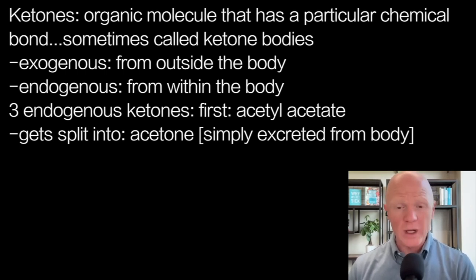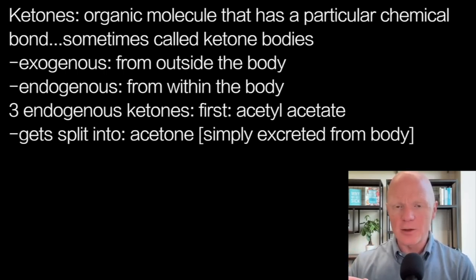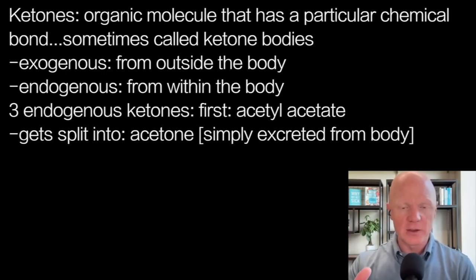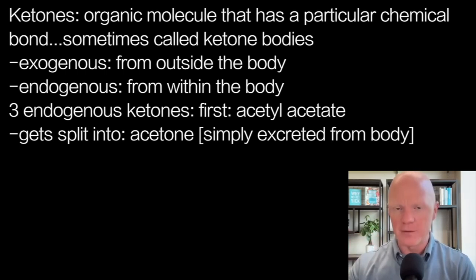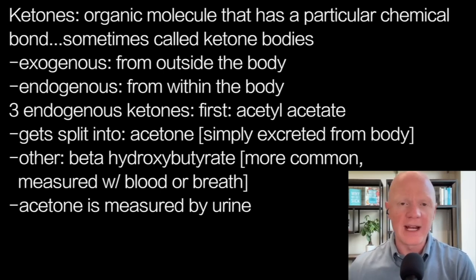What are the ketones that we make? There are three relevant ketones that fall within the ketone body family. The main one — the mother ketone — is a ketone called acetoacetate. It will get split into two different types of ketones: one called acetone, which is a ketone that just gets excreted. It is irreversible — once it is turned into acetone, it must be eliminated from the body. The other molecule that acetoacetate can turn into is one called beta-hydroxybutyrate.